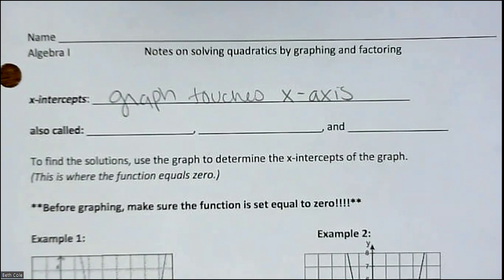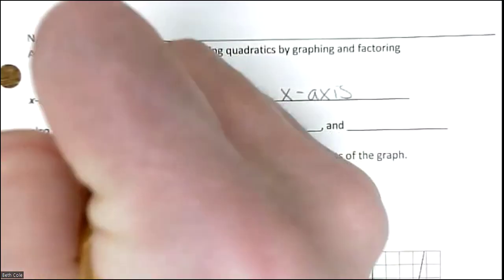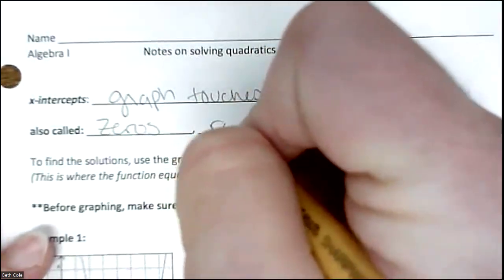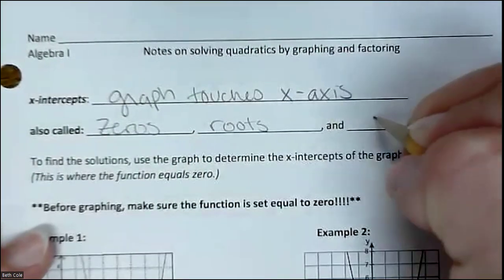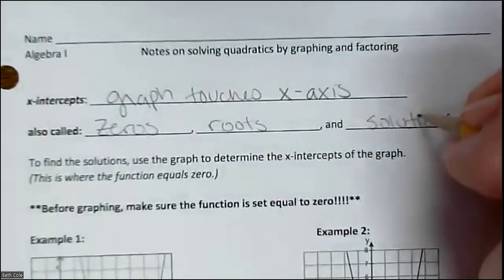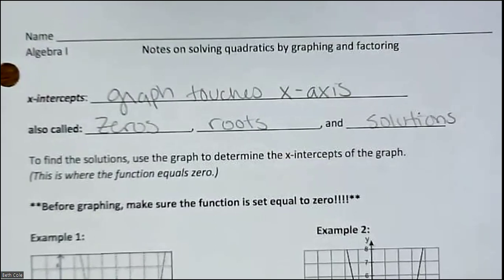This next thing is vocabulary. There are three other words that could stand for x-intercepts. They are also called zeros, roots, and solutions. So no matter which one of those words the directions say, you have to read the directions — it's asking you for the x-intercepts. You can't go 'what are the zeros?' without knowing that means x-intercepts.